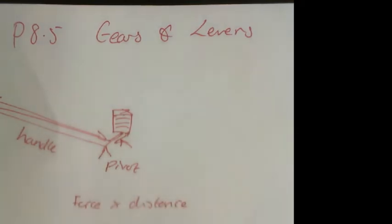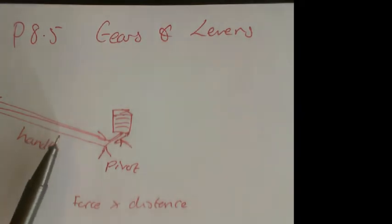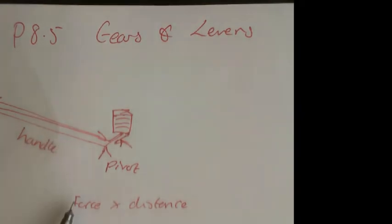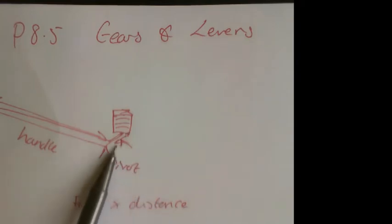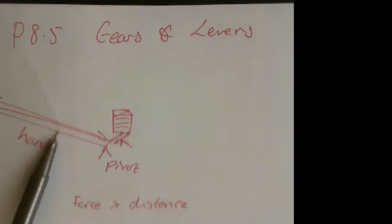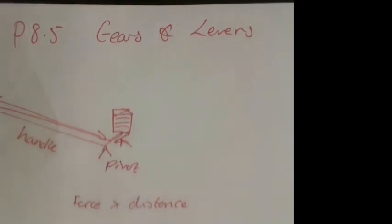The two ways you can make the moment of your lever bigger is either by making the force bigger, or by making the distance from the pivot bigger. That's the key thing about levers — anything where you're acting at a distance and putting a turning effect on, that's what it's all about. And it's known as a force multiplier.